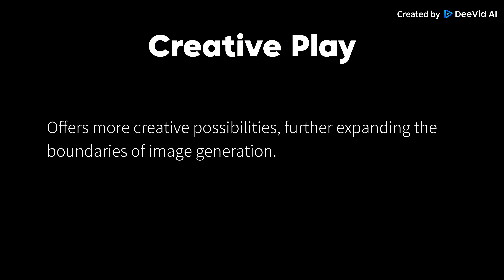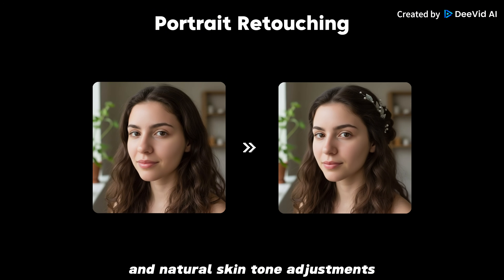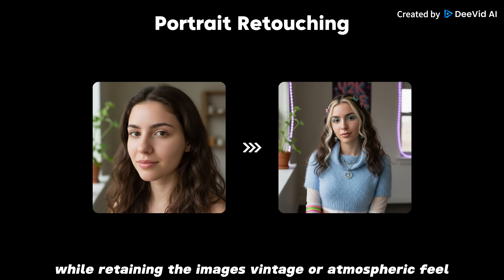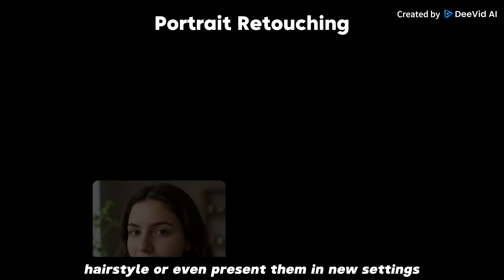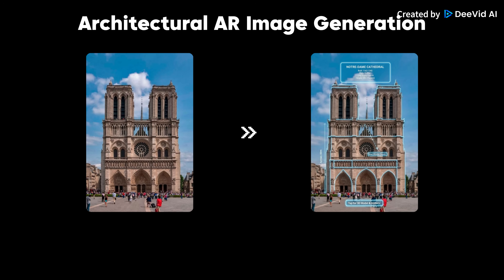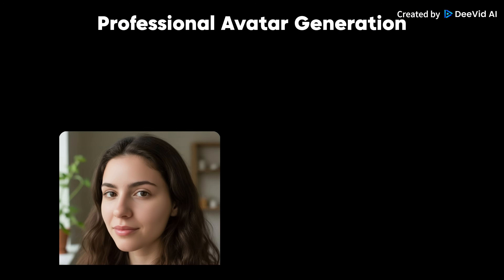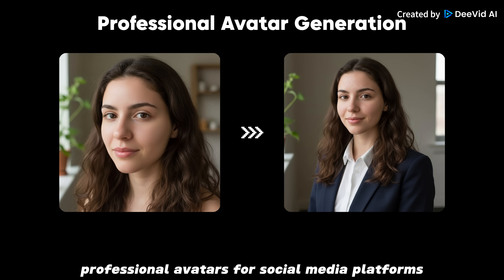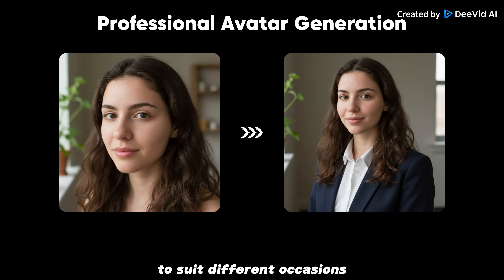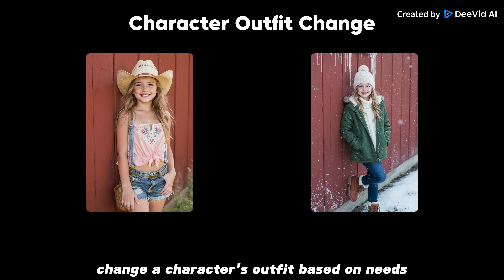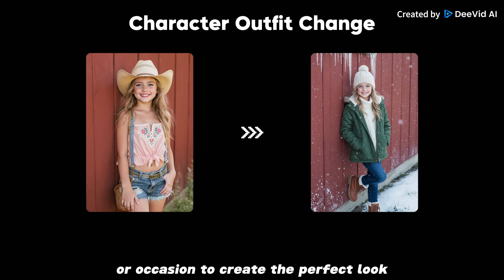Creative Play offers more creative possibilities, further expanding the boundaries of image generation. Portrait retouching provides fine damage restoration and natural skin tone adjustments while retaining the image's vintage or atmospheric feel — easily changing a character's expression, hairstyle, or presenting them in new settings. Architectural AR image generation creates augmented reality images of buildings using AI, seamlessly combining virtual buildings with real-world environments to assist with architectural design and displays. Professional avatar generation quickly produces high-quality professional avatars for social media, resumes, and networking sites. Character outfit change lets you modify a character's outfit, supporting various styles, accessory combinations, and seasonal adjustments.